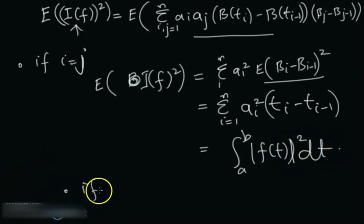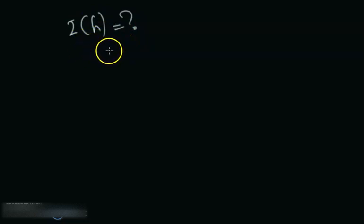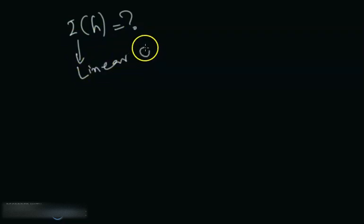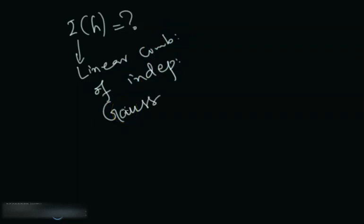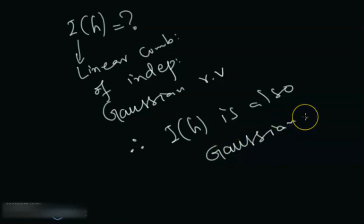Now, why is this integral a Gaussian random variable? Because it is a linear combination of independent Gaussian random variables. Therefore I(h) is also Gaussian. So this was step one. For step two, I'll be coming in the next video.